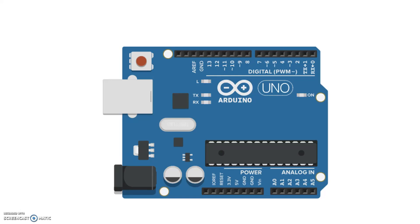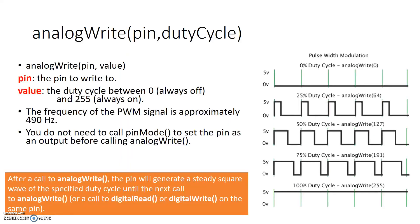So imagine a waveform where it is 0 volts and stays 0 volts forever — 0 volts 100% of the time. If a signal is 0 volts 100% of the time, then the analog value associated with this signal is 0 volts as well. So it's not terribly exciting.